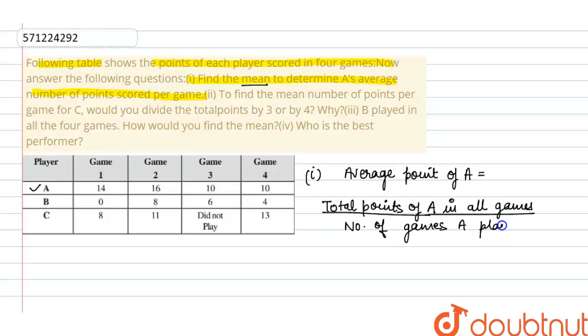According to this, we will take the data from the table and put the values. Total points of A are 14 plus 16 plus 10 plus 10. These are the values from game 1, game 2, game 3, game 4, and number of games A played is total 4 games.